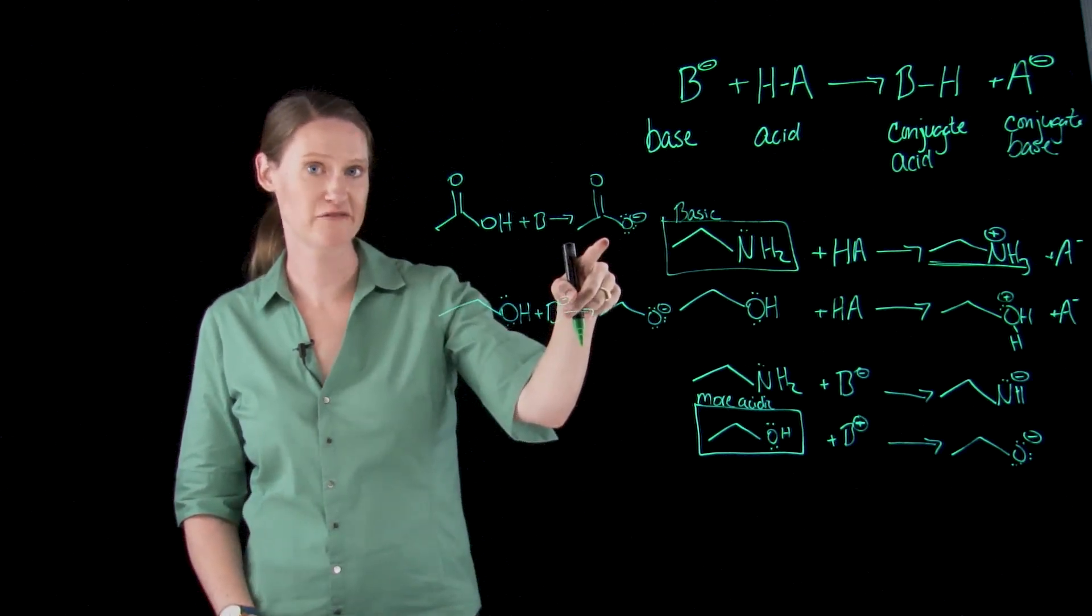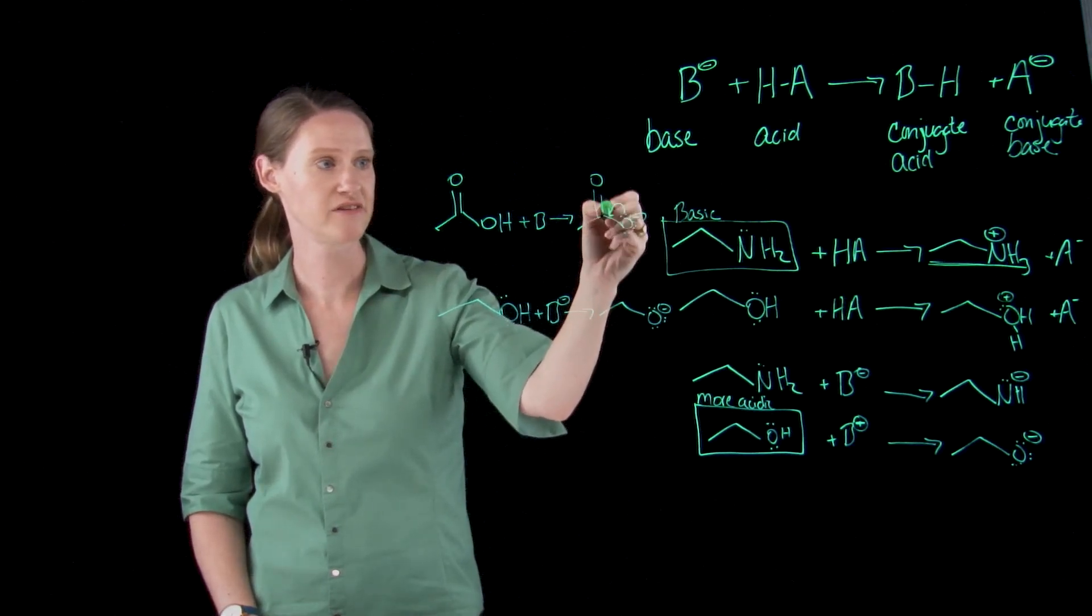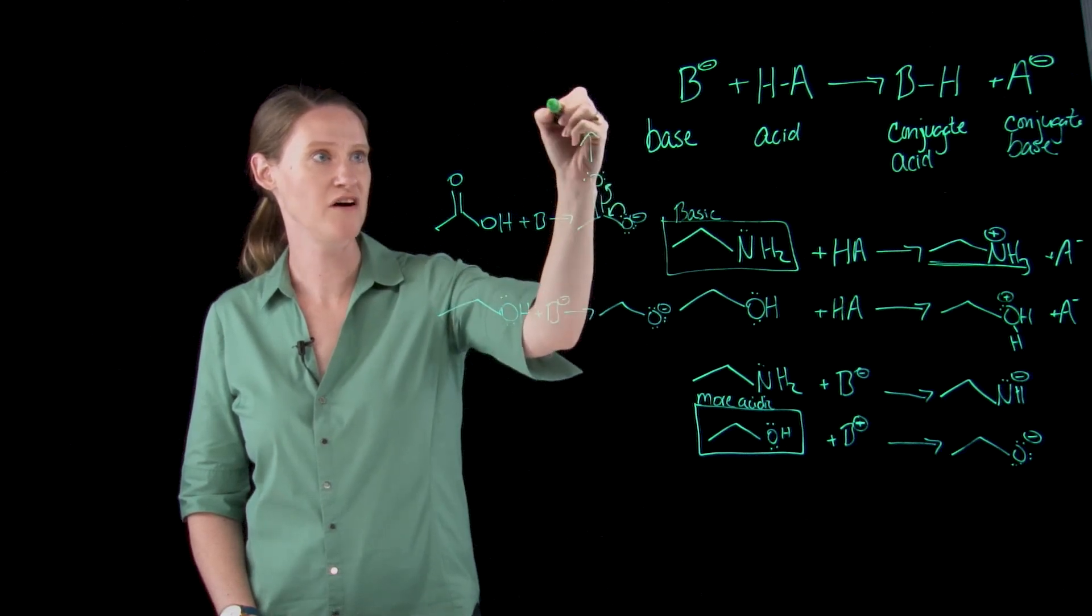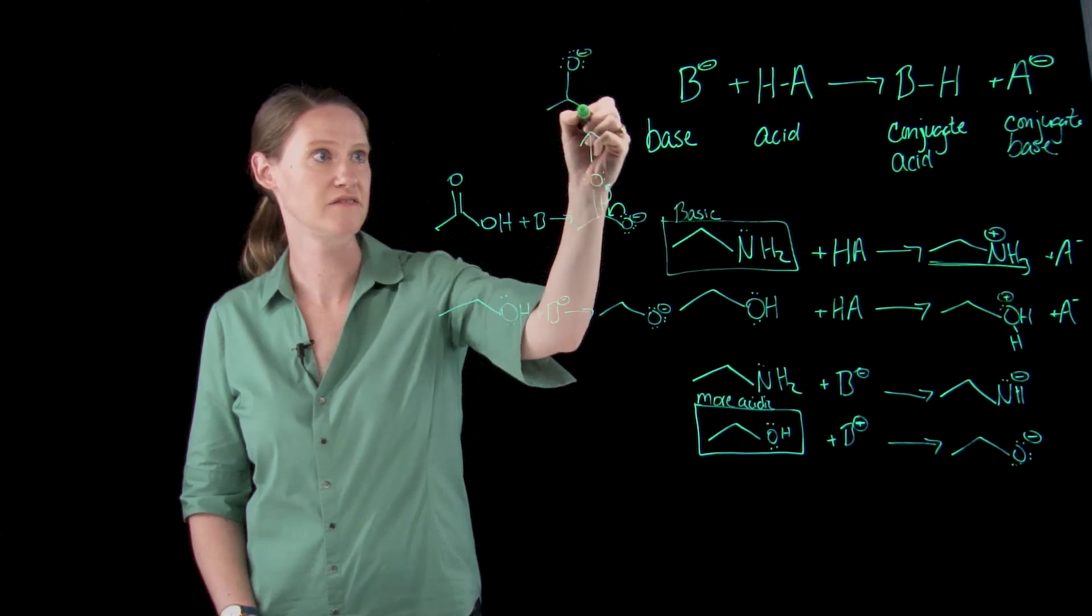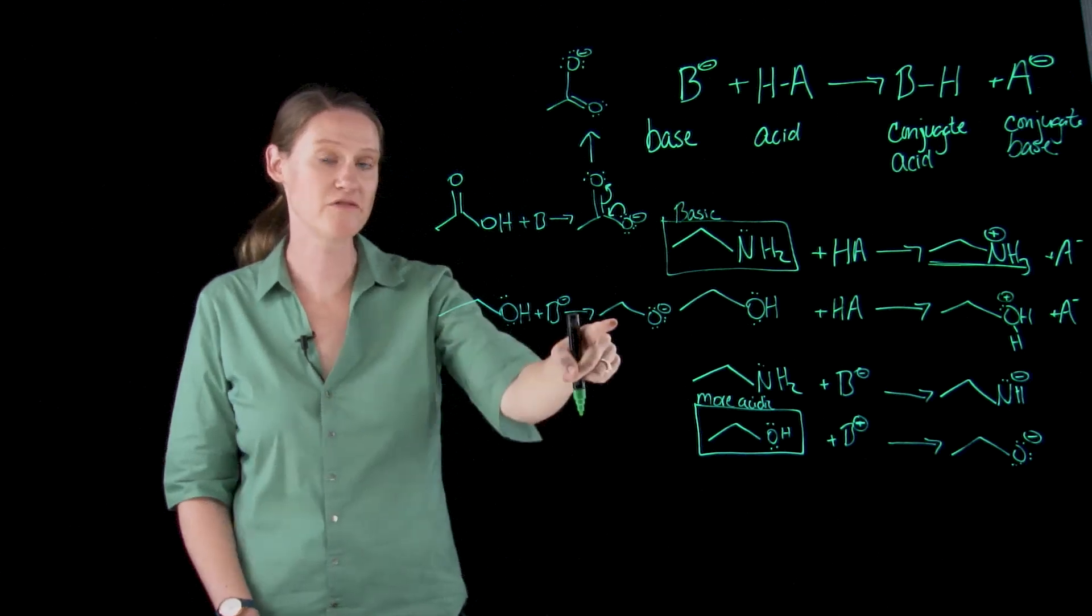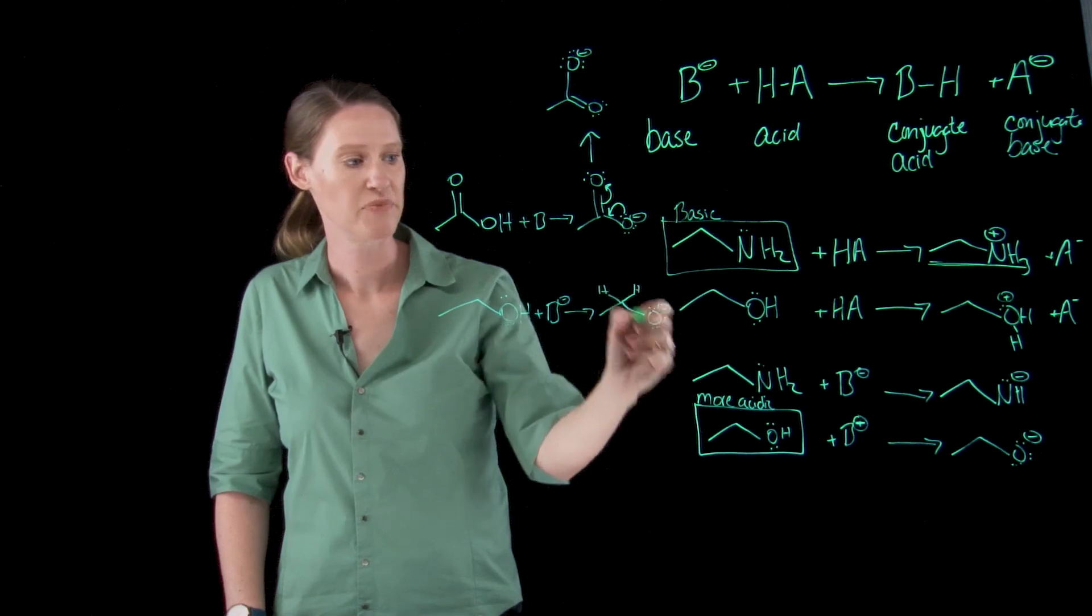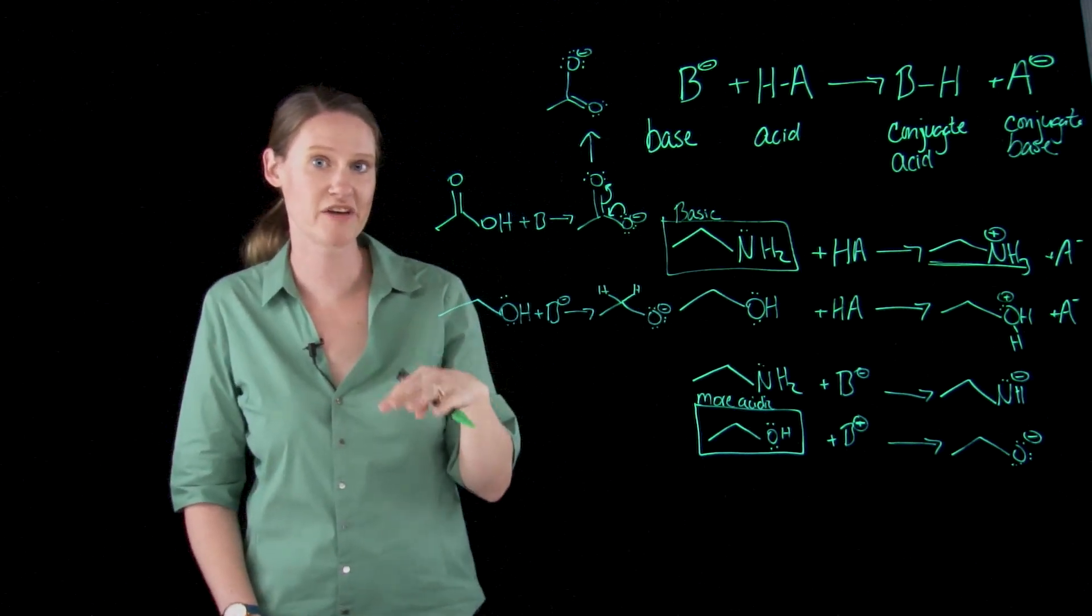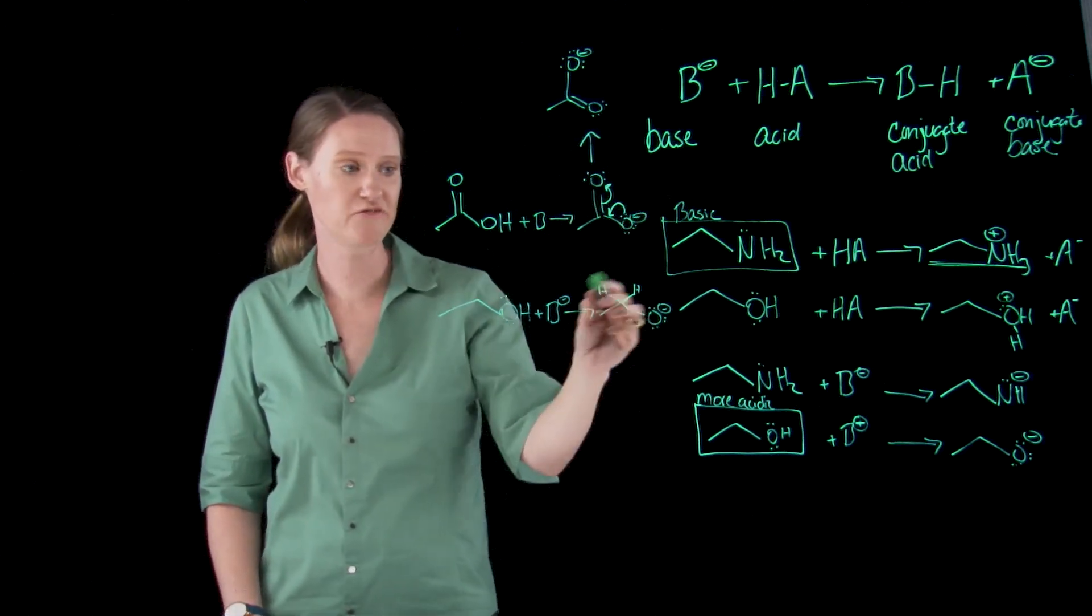I have a valid resonance form for this carbonyl. I can move two of these electrons and move two of these electrons and draw a valid resonance form that looks like this. I have no valid resonance forms for the alcohol. There are two hydrogens here and so there's no way for me to push these electrons to move the electronegativity away from that oxygen. So this molecule has a resonance form and this one does not.